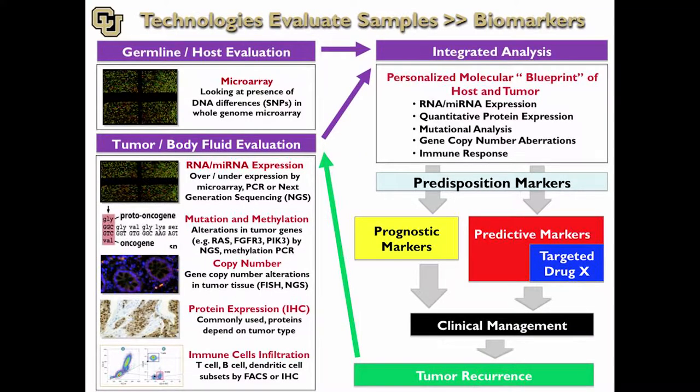Here are some of the assays you see in journals in the urology literature. Starting with the germline or host: microarrays can look at single nucleotide polymorphisms, SNPs. In terms of tumor and body fluid examination, you look at RNA and microRNA with PCR and sequencing, mutations with sequencing, copy numbers with things like FISH — like UroVysion — protein expression by immunohistochemistry, which you're familiar with for things like PSA, and now with immuno-oncology, immune profiling.